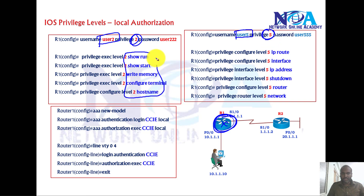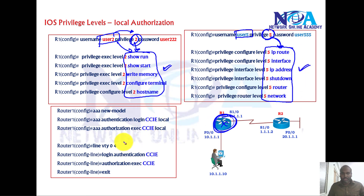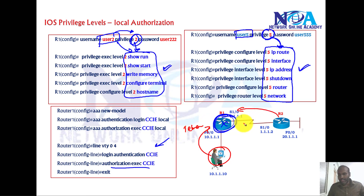We'll allocate specific commands to specific privilege levels. Whichever user is assigned privilege level 2 will be able to execute those commands, and whichever user is assigned privilege level 5 will be allowed to access only the specific commands defined for that level. Then we'll enable authorization and verify from router 2 using telnet with these user accounts.